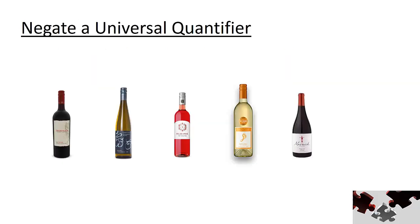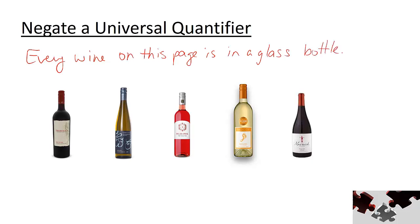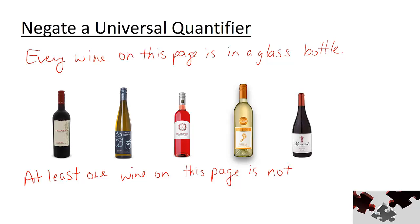One thing we may be interested in doing is negating a statement involving a quantifier. Our statement involving a universal quantifier from before was: every wine on this page is in a glass bottle. This statement is true — we could go through each of these bottles one by one and note that each wine is indeed in a glass bottle. To negate it, we would require a claim about at least one wine not being in a glass bottle. For example, at least one of the wines on this page is not in a glass bottle. Take a moment to show yourself that this negated statement is indeed false.